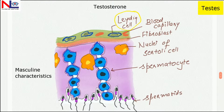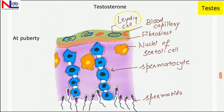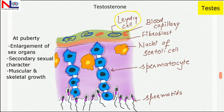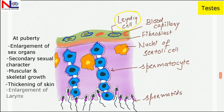At puberty, testosterone brings about changes in males such as the enlargement of male sex organs, the development of secondary sexual characteristics — including muscular and skeletal growth, thickening of the skin, and enlargement of the larynx — so the male voice becomes deeper compared to females.